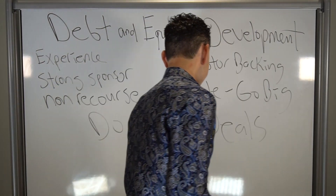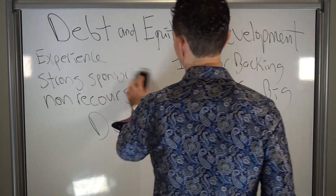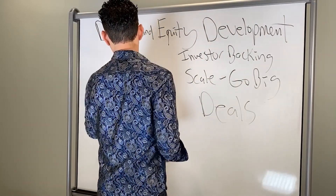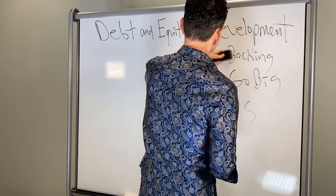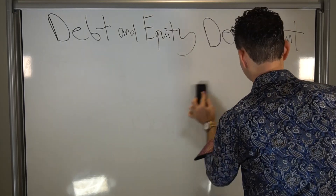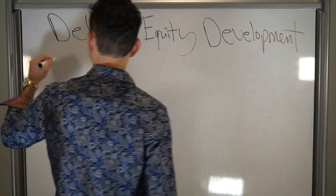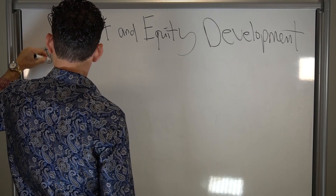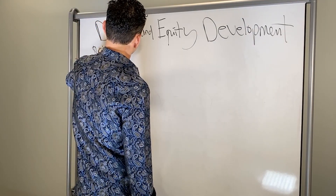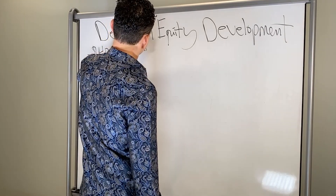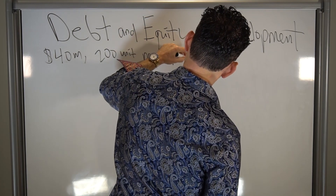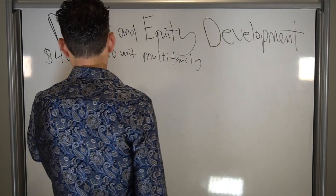Let's go into an example, because I think it's important to actually talk through a scenario. I'll give an example of one we just did — it was a $40 million deal, multi-family ground-up construction, 200 units. So: $40 million, 200-unit multi-family. We're doing a lot of multi-family ground-up construction.